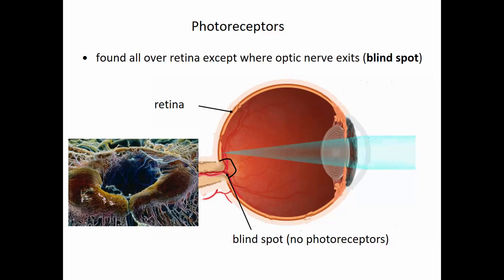The type of receptors that respond to light and are found at the back of the retina are called photoreceptors. They are found all over the retina except at the point where all the axons gather and leave the eyeball — where the optic nerve exits — creating a blind spot. But if you stare out into space and try to locate your blind spot, you can't, because your brain just patches it in. It's like Photoshopping over the top of that blind spot — your brain interprets the view as having no blank spots.